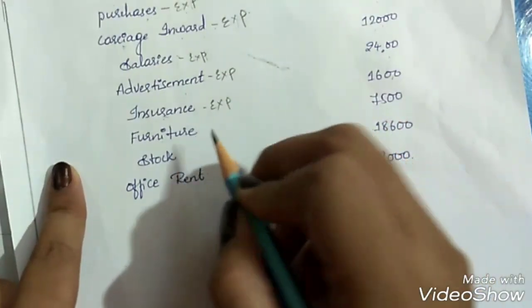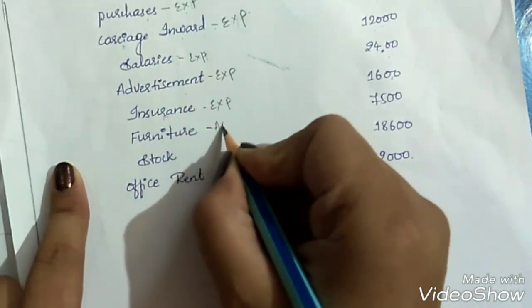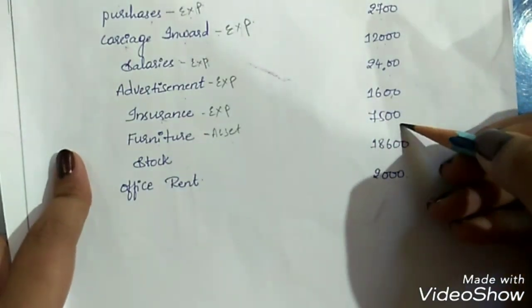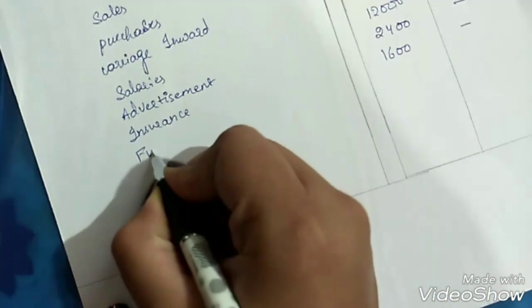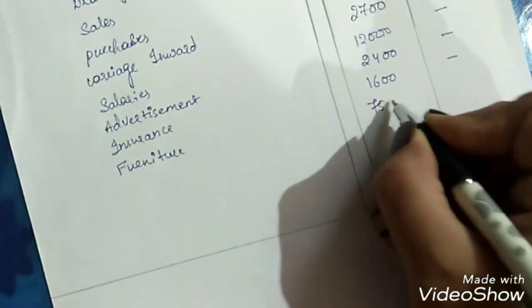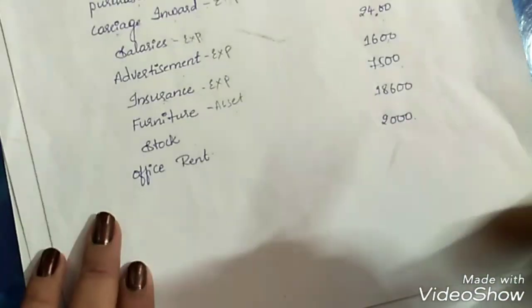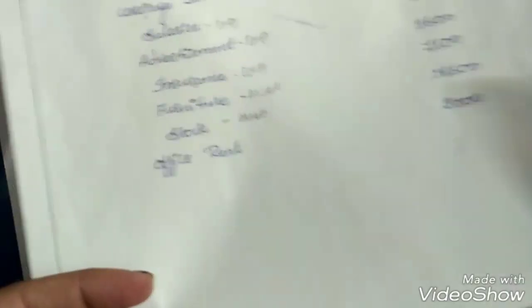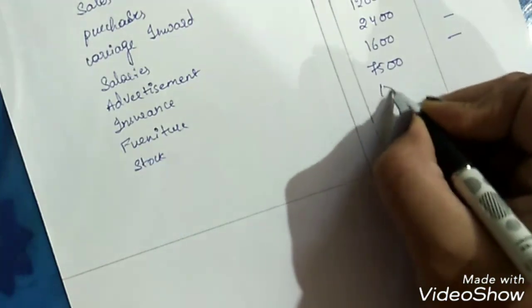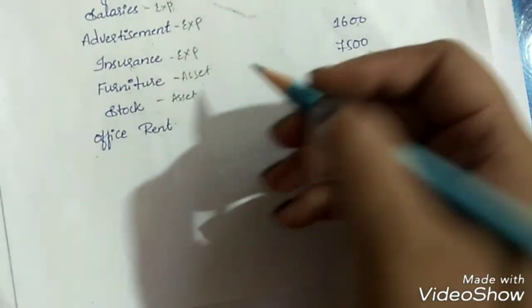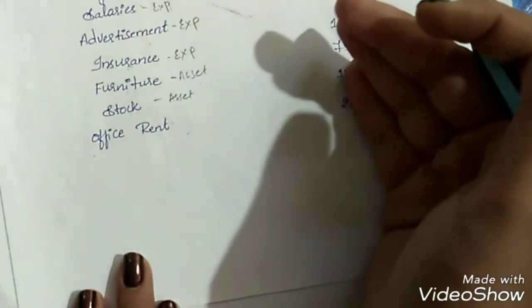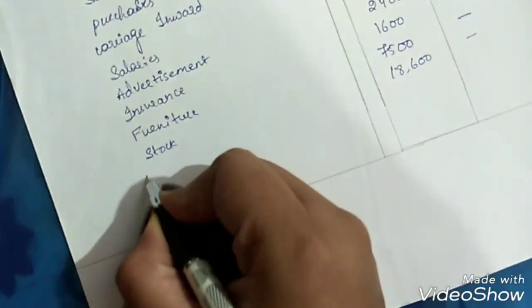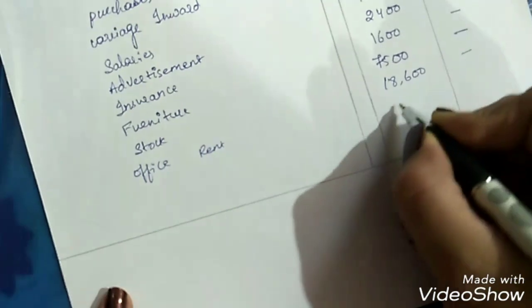Next is furniture. Furniture is our asset — it is an asset to the business organization, so it needs to be recorded on the debit side. Amount is Rs. 7,500. Next is stock, which is also a current asset. Rs. 18,600 on the debit side. Finally, office rent. Paying rent is treated as an expense because we have to pay it every month. Expense goes on the debit side. Rs. 2,000. Recording is now completed.